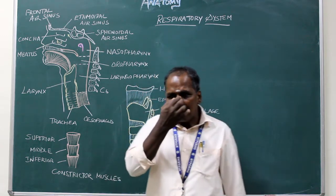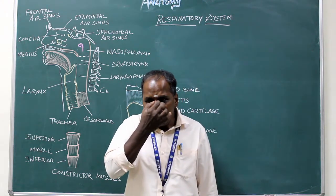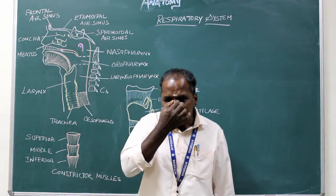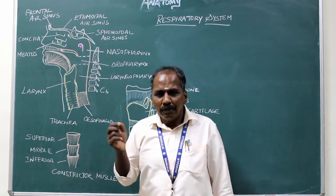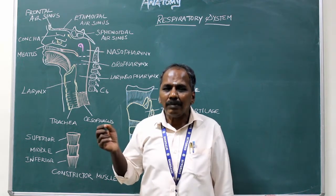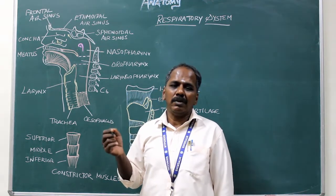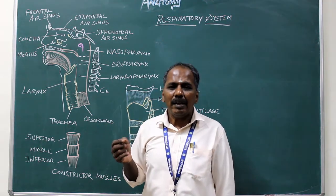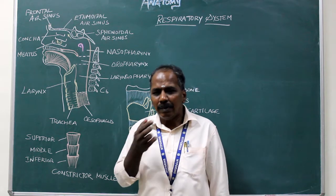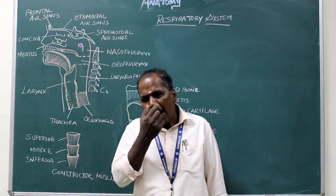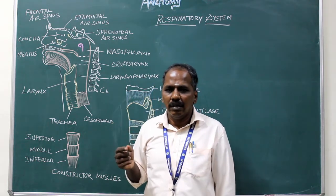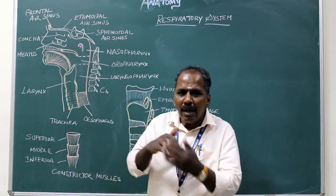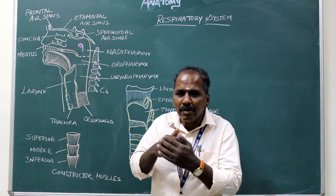Nose: It is made up of two parts — the bony part and the cartilaginous part. The bony part is made by the nasal bone. The cartilaginous part is made by hyaline cartilage. The nose is lined by mucous membrane.